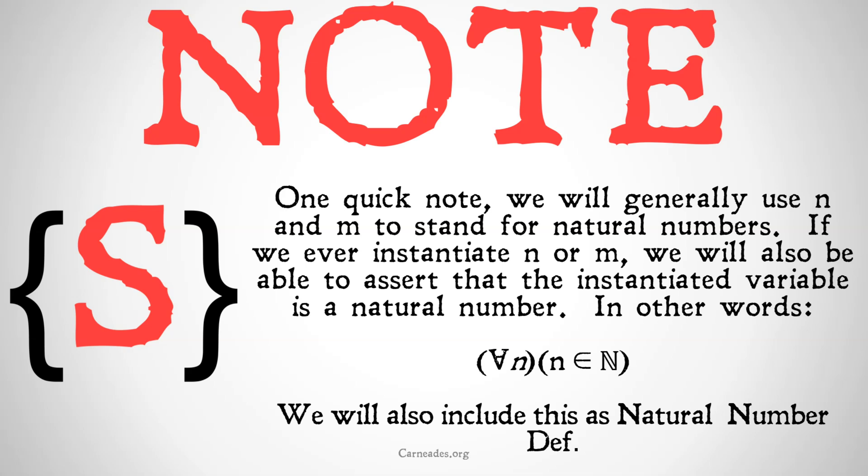A quick note: we will generally use lowercase n and lowercase m to stand for natural numbers. If we ever instantiate on an n or an m, we will also be able to assert that the instantiated variable is a natural number. In other words, for all n, n is a member of N (the natural numbers). We'll also include this as the natural number definition sometimes in proofs.